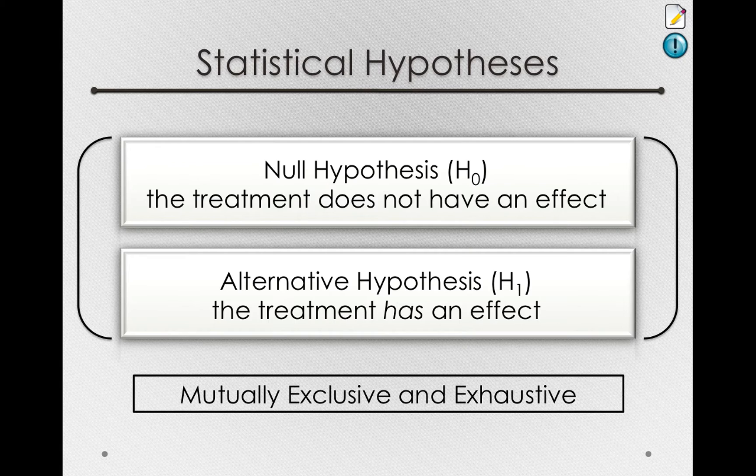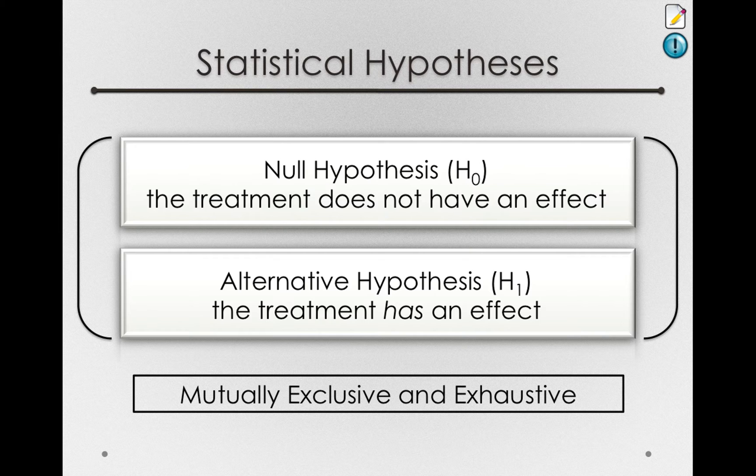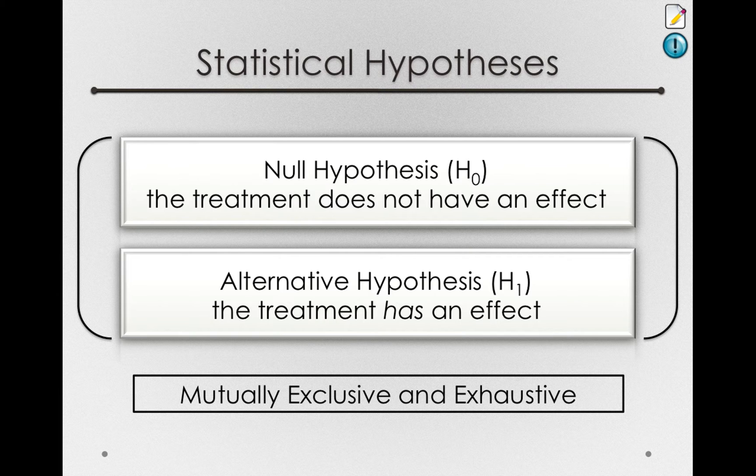All of statistical inference is like this. We need to know if our effect is like 100 heads on 100 coin flips, or if it's like 51 heads on 100 coin flips. In both cases, the null hypothesis could be true, but when we get 100 heads, it doesn't seem reasonable to assume it's true.